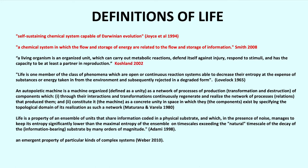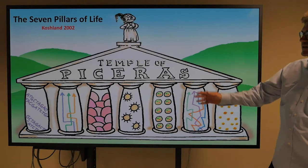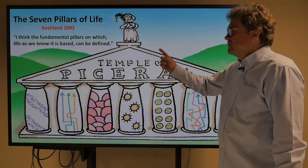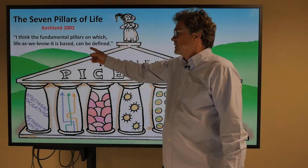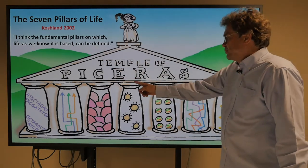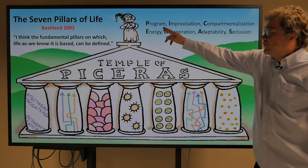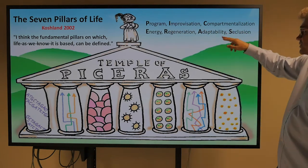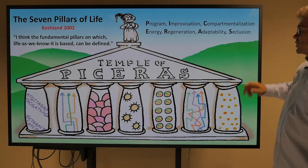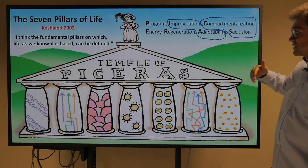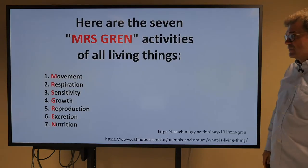Here's another definition by Koshland, 2002. He defined the seven pillars of life using the acronym PICERAS: Program, Improvisation, Compartmentalization, Energy regeneration, Adaptability, and Seclusion. Improvisation and adaptability seem about the same to me, so I'm not quite sure where this is coming from.